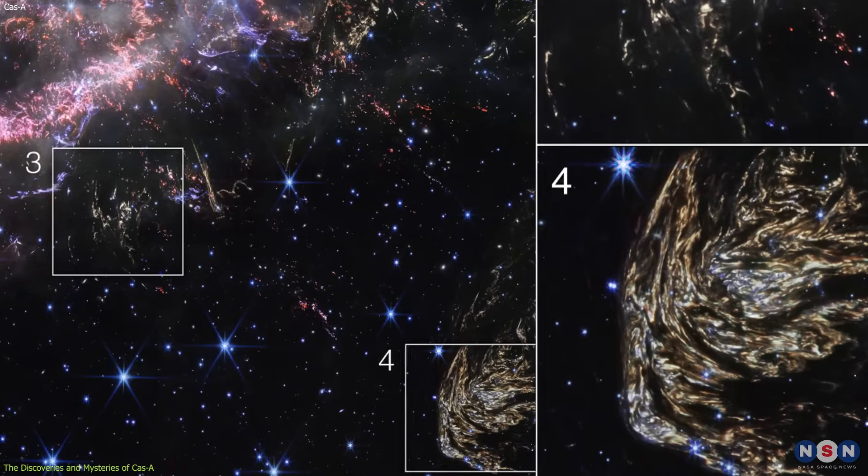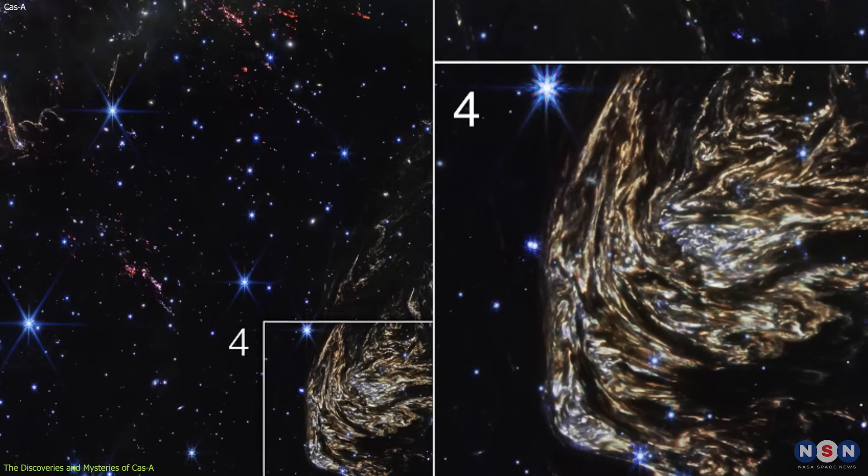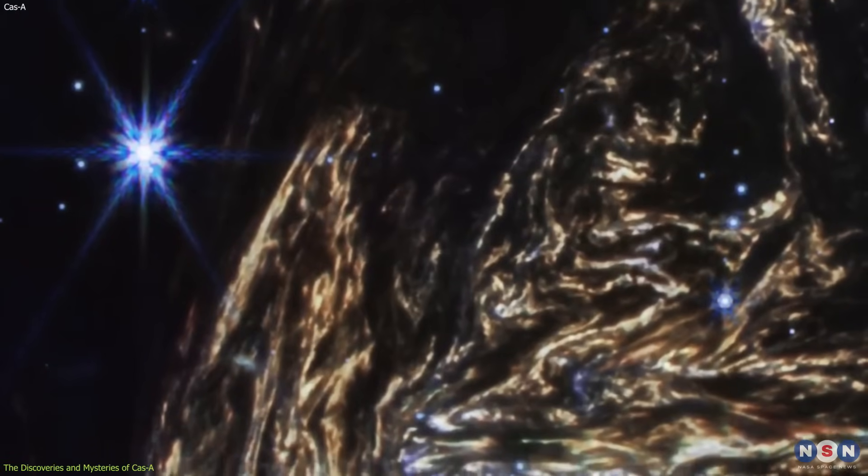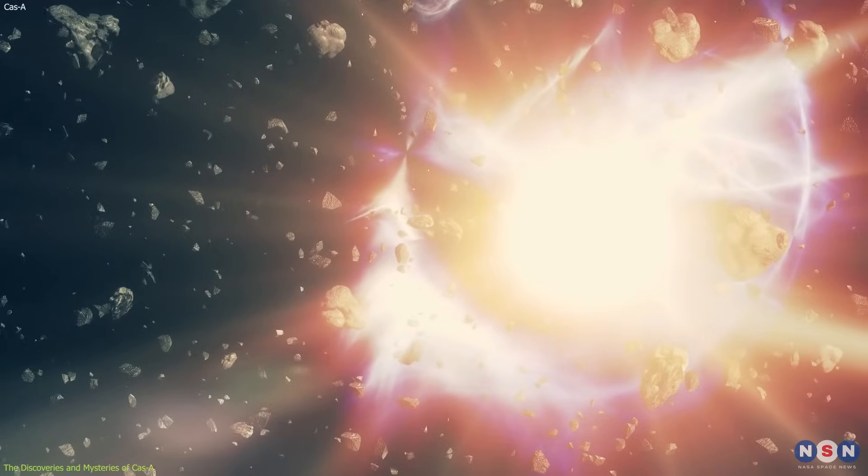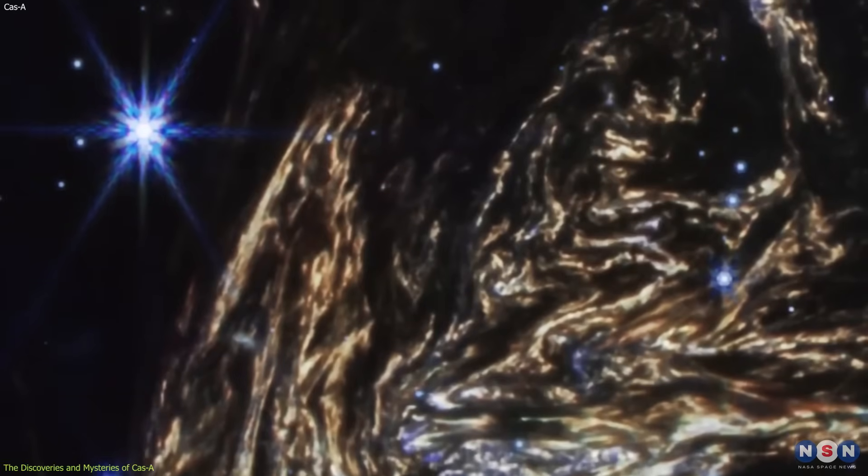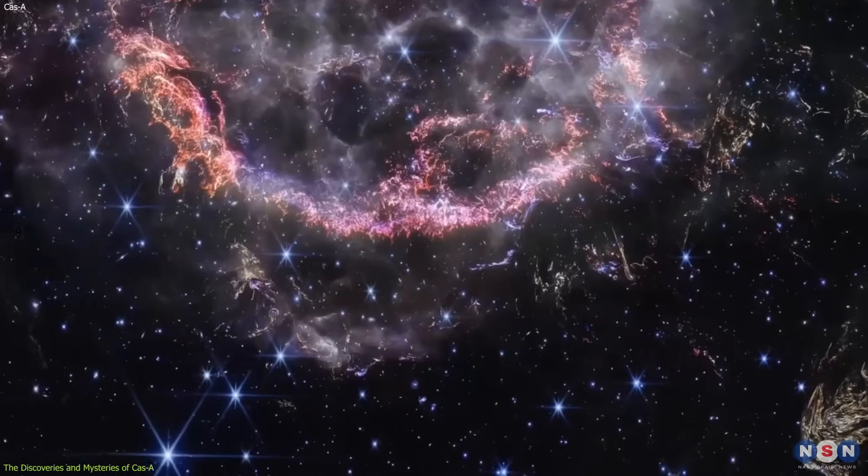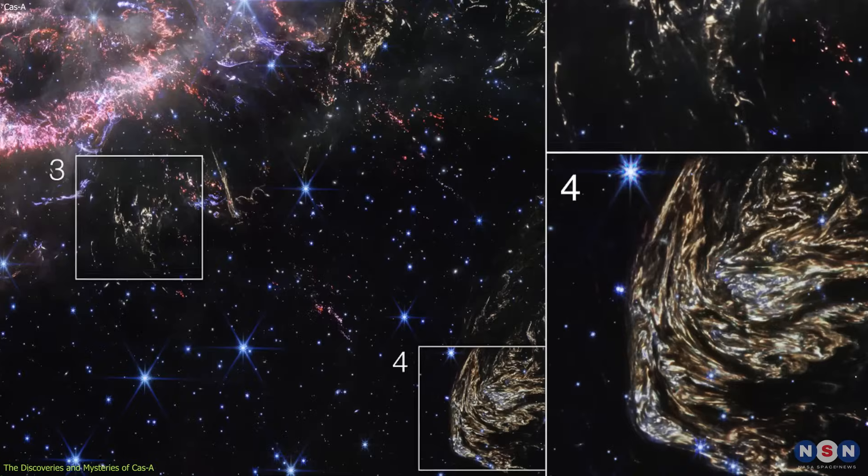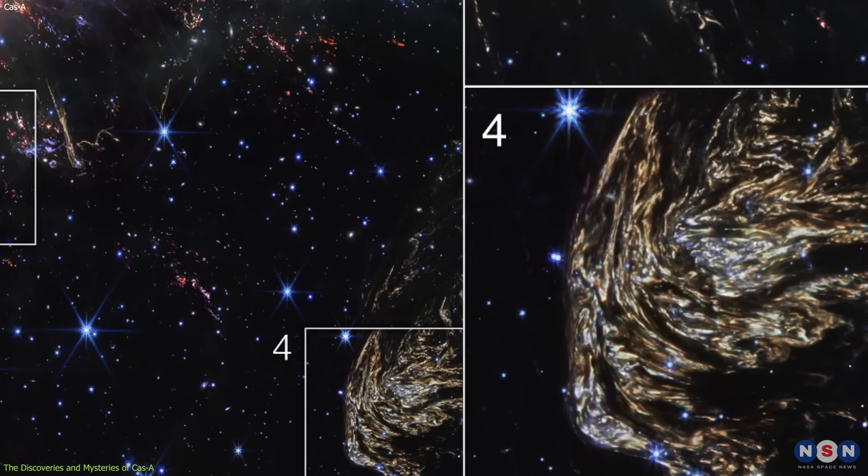Another discovery that the NIRCam image shows us is a blob of gas and dust that researchers have named Baby Cass A. This name is fitting because the blob of matter appears to be the offspring of the main supernova remnant, or rather, a reflection of the light from the explosion that is being reflected from warm dust that glows as it cools. Baby Cass A is located around 170 light years behind Cass A, and it is likely to be an object of great fascination to astronomers because of its intricate dust patterns.